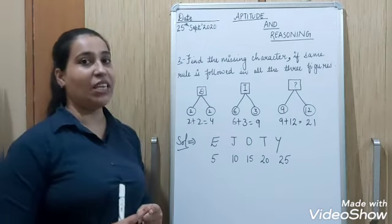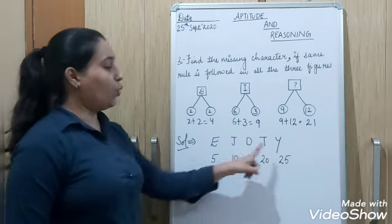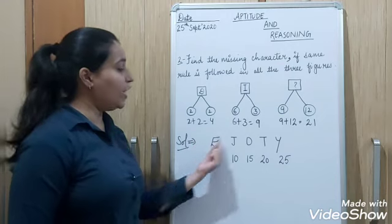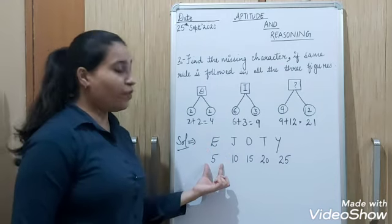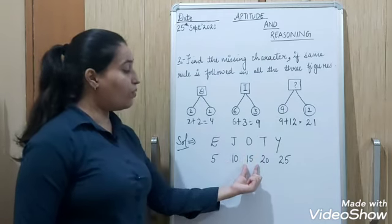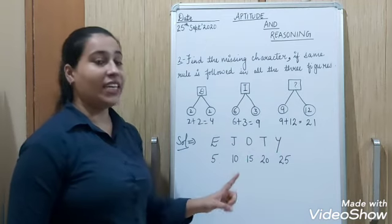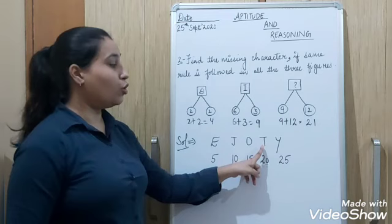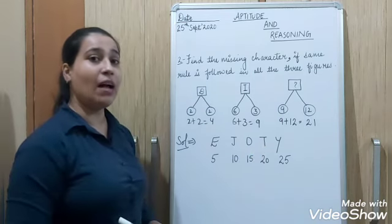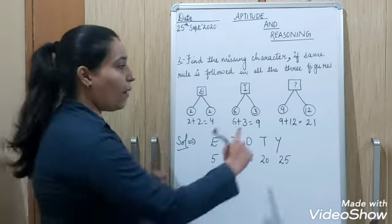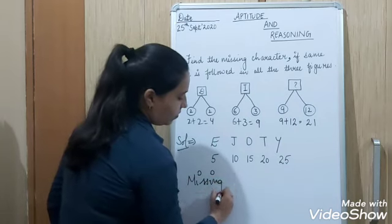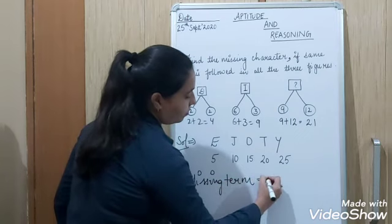So for that there is an easy way for you to remember. E J O T Y, just remember it. E J O T Y where you can see E is on 5th place, J 10th, O 15, T 20, Y 25. So 20th place has T. So 21, after 20, 21, after T which letter will come? U. So the required answer will be U. So the missing term is U.